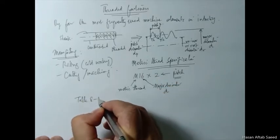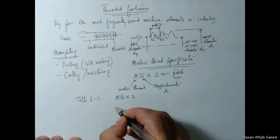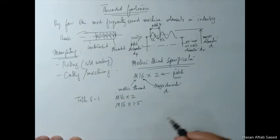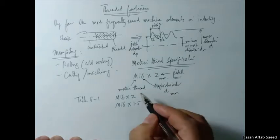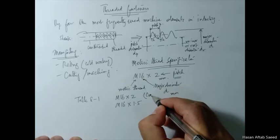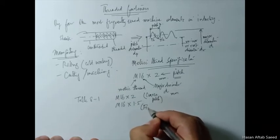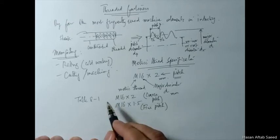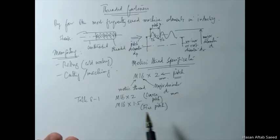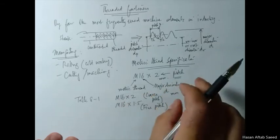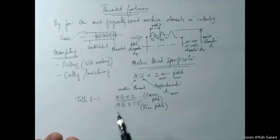Why is there a need to specify the pitch? Why isn't it enough to say M16? That is because for M16, as you can see in Table 8.1, it can be M16×2 and it can also be M16×1.5. The pitch and diameter are both in millimeters since we are talking about metric threads. M16×2 is called coarse pitch and M16×1.5 is called fine pitch. If you don't specify anything and just say M16, the standard coarse pitch of 2 mm is assumed.